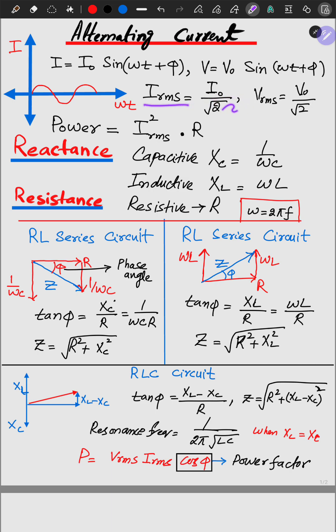The RMS values of current and voltage are given as below. The power is given as I RMS square multiplied by R.